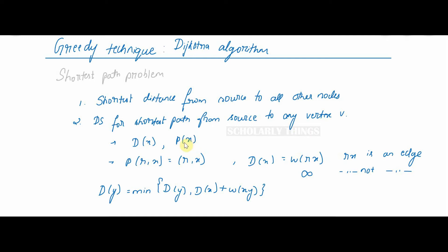Start scanning from the root and take initial paths P(R,X) = R,X. D(X) will be W(R,X) if R,X is an edge, infinity if R,X is not an edge.